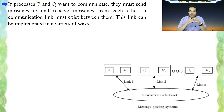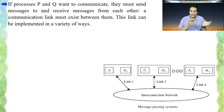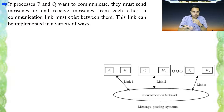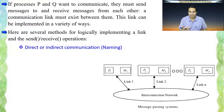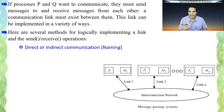If process A and process B want to communicate, A should be able to send a message to B and at the same time should be capable of receiving a message from B. To make this happen, a link needs to be established between them. There are different mechanisms to implement this link. The first way of logically implementing a link involves naming, and either direct or indirect communication.